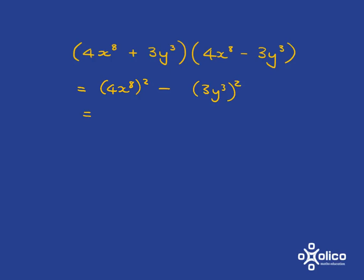Now let's watch what happens when we square. When we square, we've got 4 times 4, which is 16. And then we've got x to the 8 multiplied by x to the 8. And so we're going to get x to the 8 plus 8, so we're going to get x to the 16.